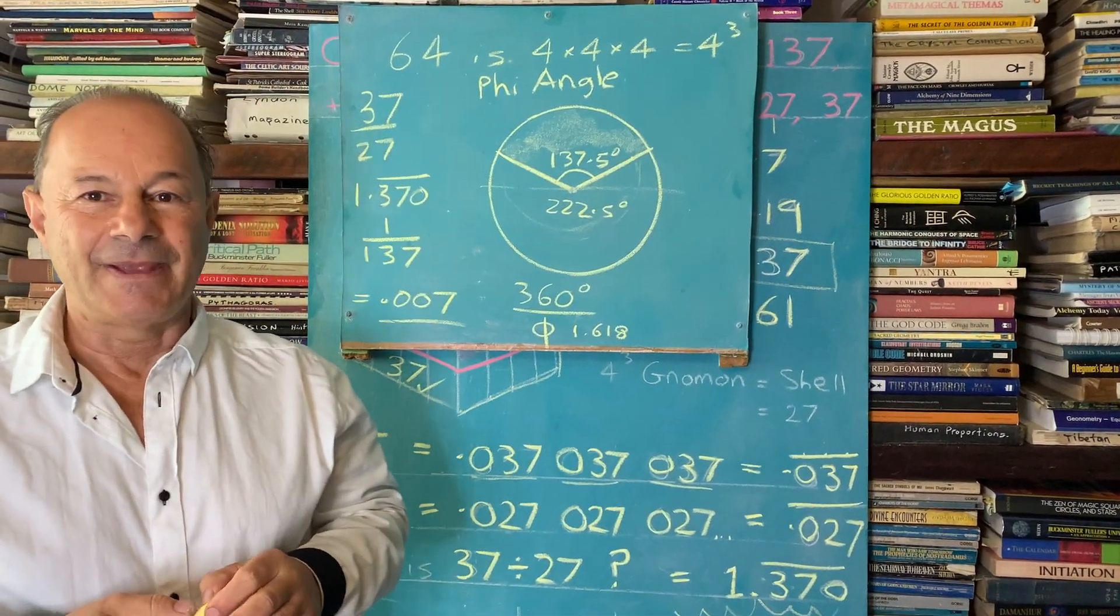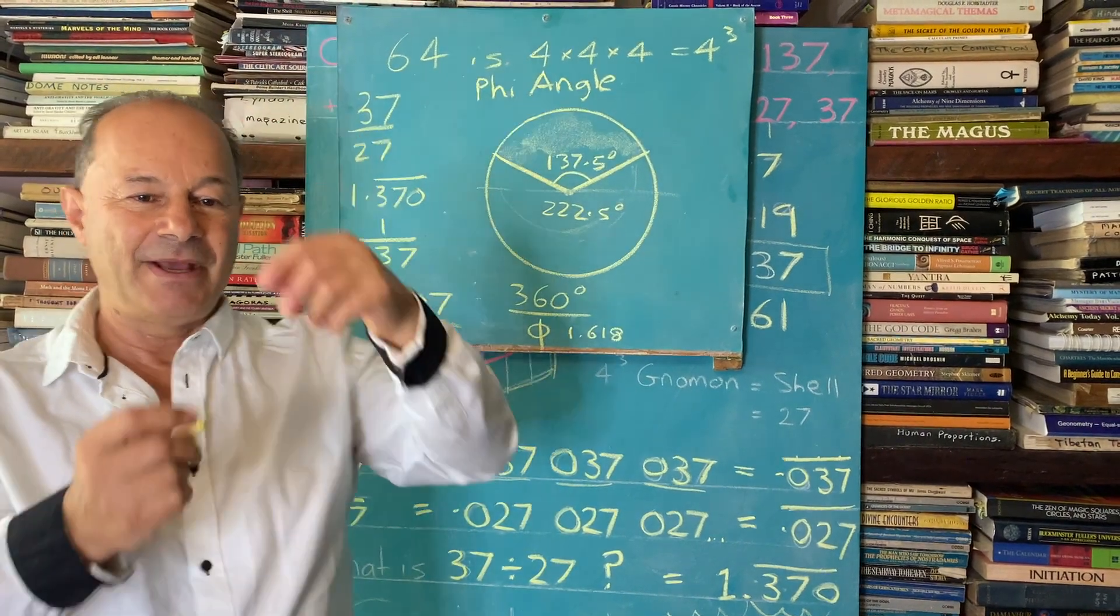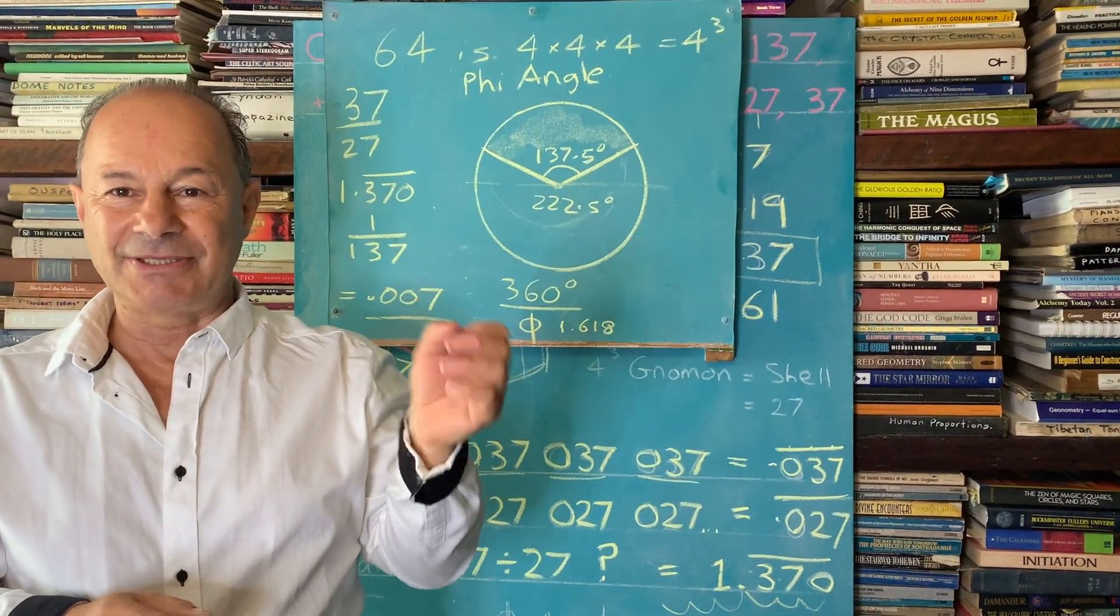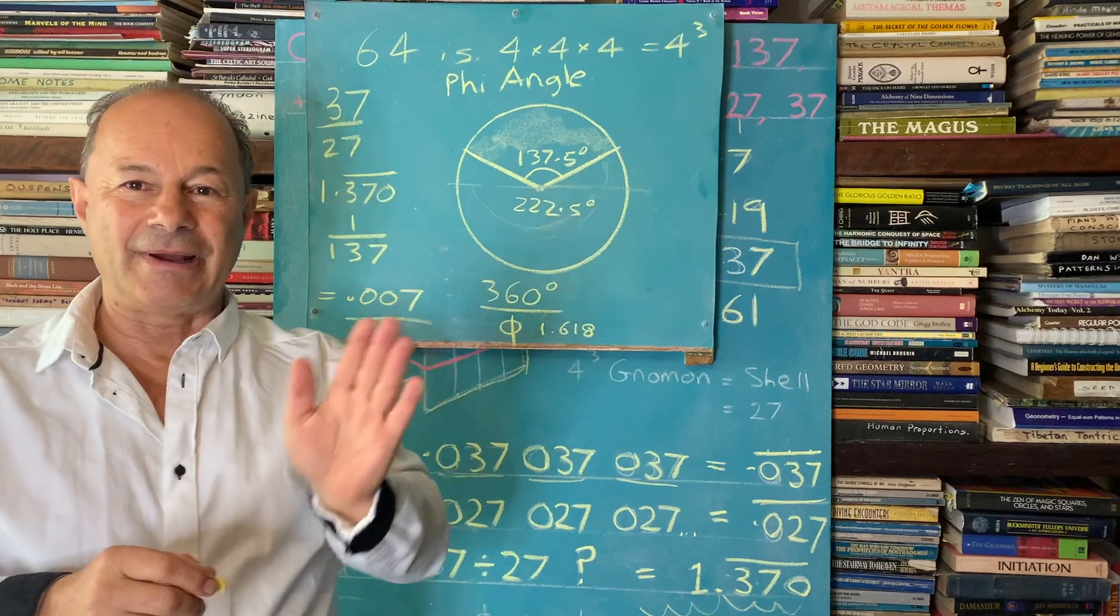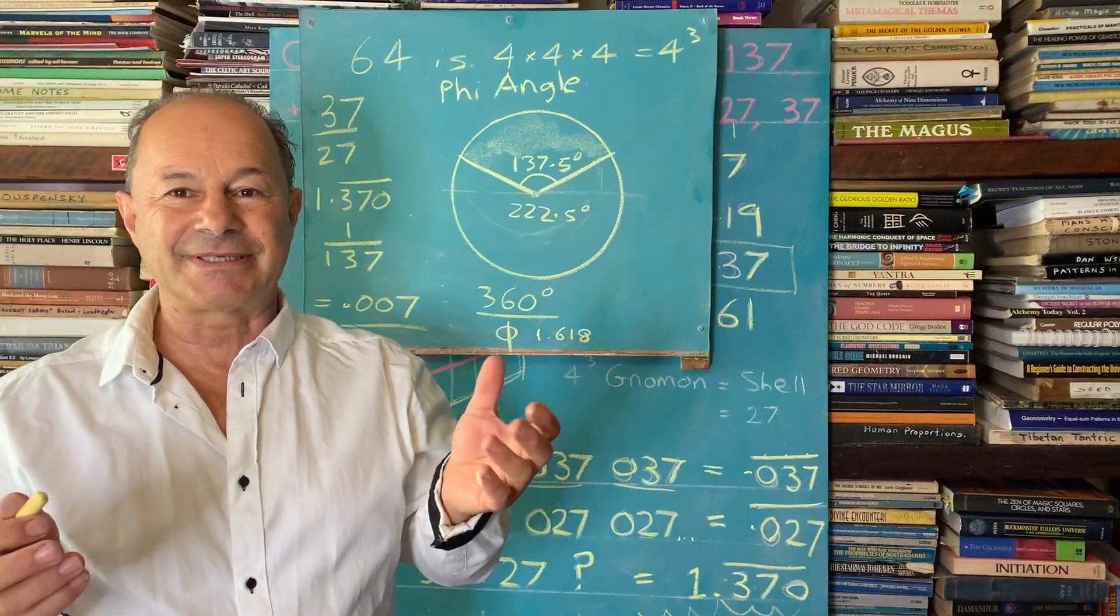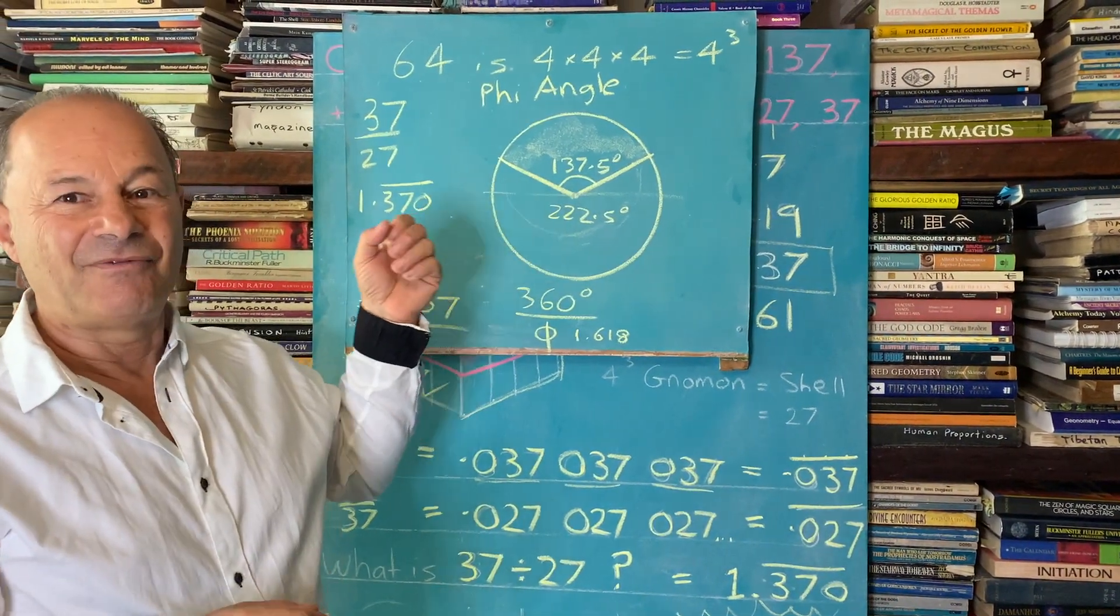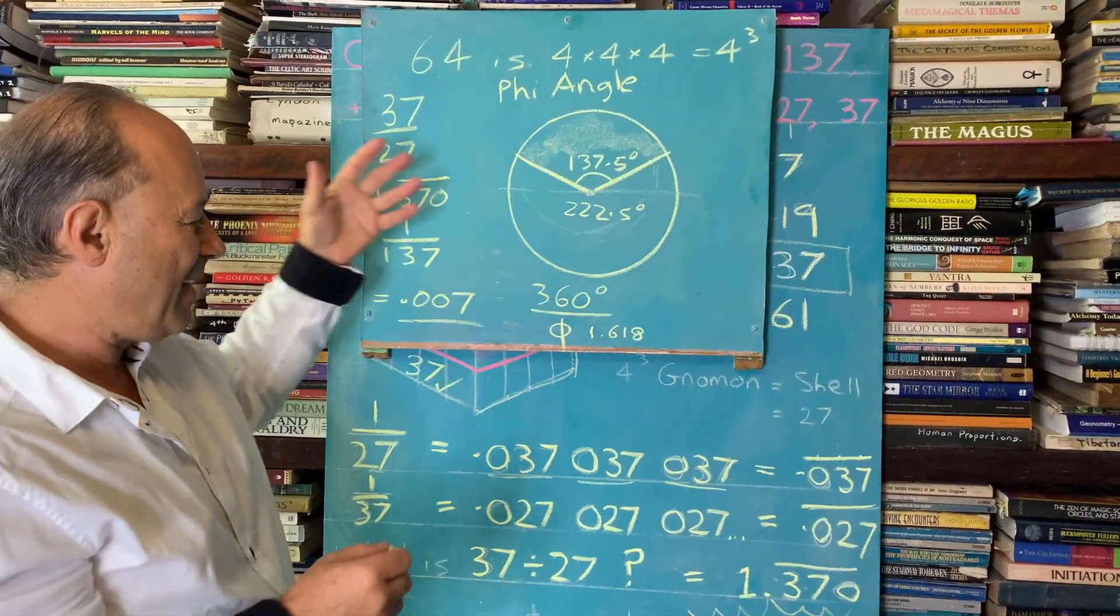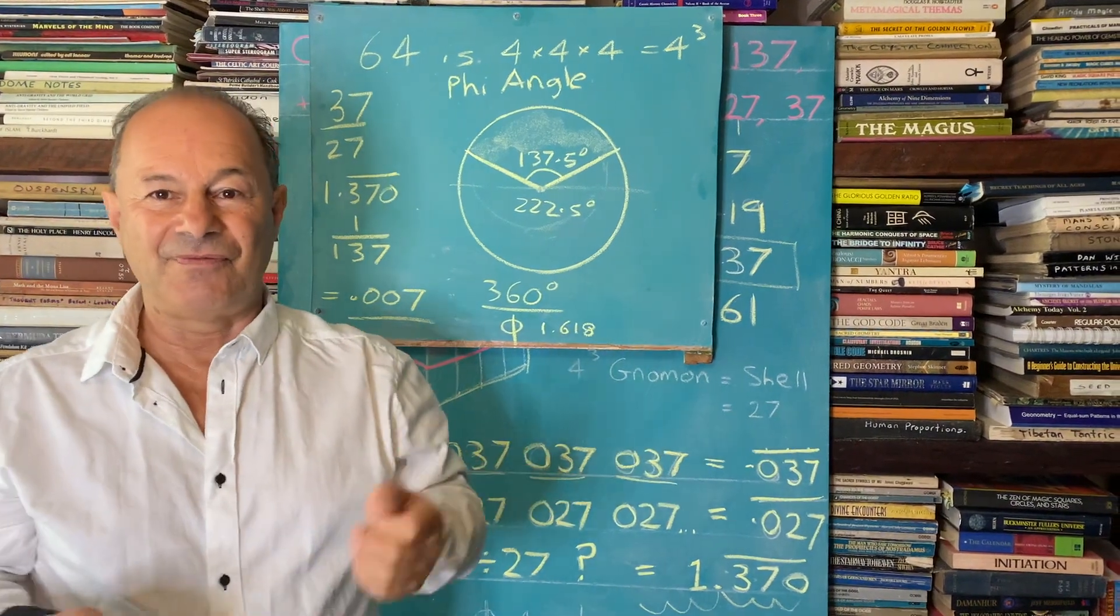So this golden angle is the key to what we call phyllotaxis. So phyllotaxis is about, is how plants distribute leaves. If you have a vertical stem, the leaves just don't come out at any angle. They obey the golden angle. Taxis means to turn in Latin. So the way that leaves turn as they climb up the stem and distribute their leaves, they're trying to capture the sun. So this is all about the optimized solar energy for growth, for life. So the golden angle is the key. And here we found the golden angle inside the cube, the four cube.